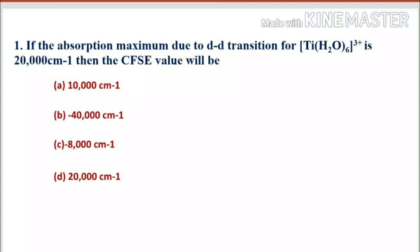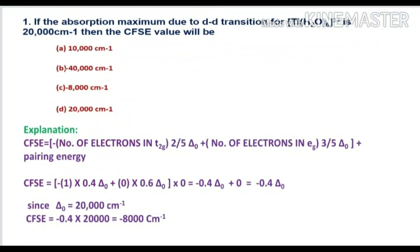Hexaqua titanium(III) ion is an octahedral complex. The crystal field stabilization energy between T2g and Eg orbitals is given as: CFSE = minus (number of electrons in T2g) × (2/5)ΔO plus (number of electrons in Eg) × (3/5)ΔO plus pairing energy. In this complex, titanium is in d1 configuration.